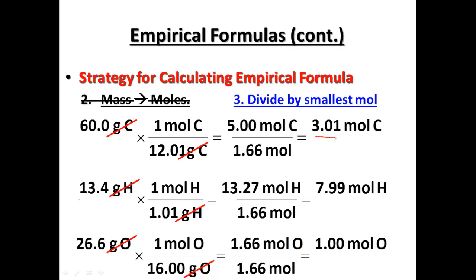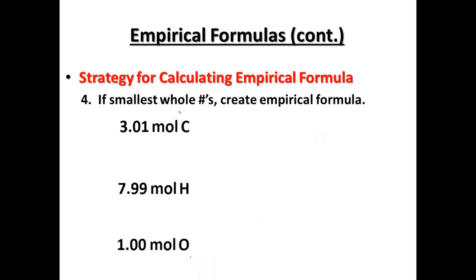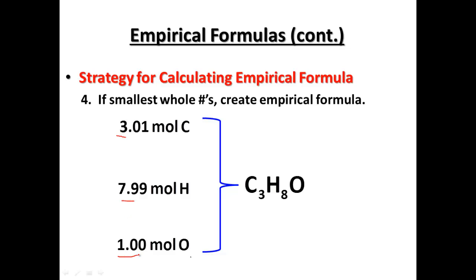Rounding, 3.01 is close enough to 3, 7.99 is close enough to 8, and 1.00 is right at 1. If the result had been something like 0.25, 0.5, or 0.33, that's when step 4 would need to take place — we'd have to multiply by a number to get whole numbers. But since we have 3 carbons, 8 hydrogens, and 1 oxygen, our empirical formula for this compound is C3H8O.